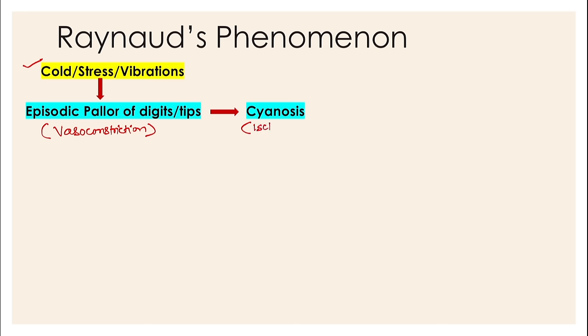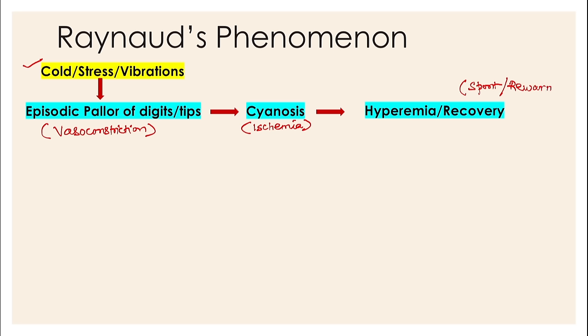The pink color of the digits comes back. Normally our fingers are pink; on exposure to cold or stress they become pale, then blue, then pink again — this is Raynaud's phenomena. This hyperemia and recovery can occur either spontaneously or on rewarming the affected digits. Hyperemia or recovery represents reperfusion of the affected digits.